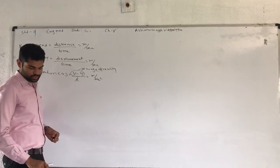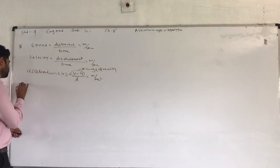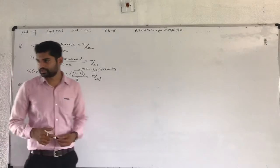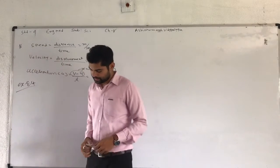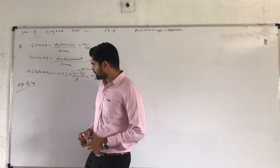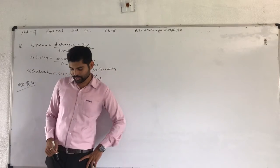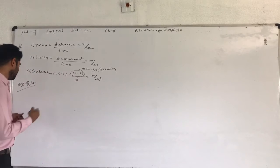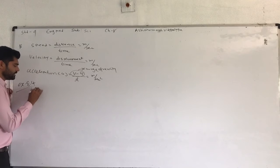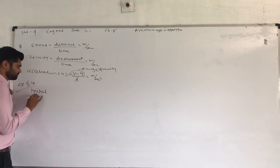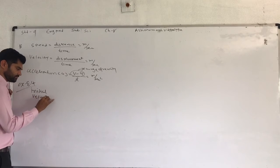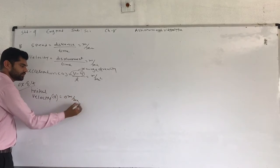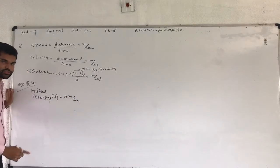According to this, using this equation, we can solve Example number 8.4. In example 8.4, when a person Rahul started his bicycle at a rest condition, it means initial velocity U is equal to 0 meter per second.